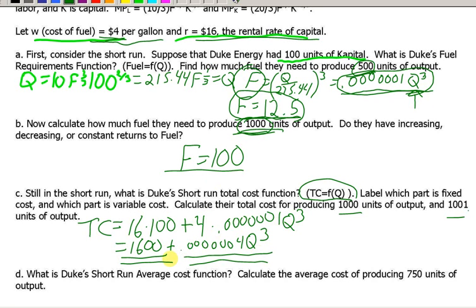So, total cost equals 16 times 100, that's 1600, plus 0.00004 Q cubed. And this is the fixed cost portion that doesn't change with quantity. And this is the variable cost portion that does change with quantity. Now, all we have to do is plug in 1,000 units and 1,001 and figure out how much our costs are. And then we can talk about variable costs real quick. So, take a minute and do that.